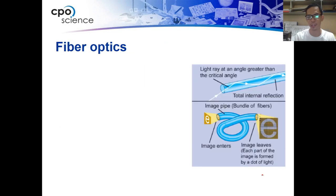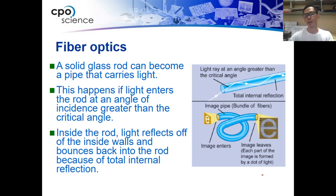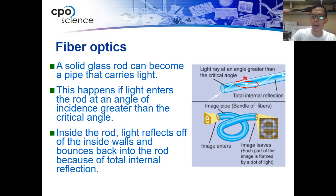One particular application of total internal reflection is the modern way of sending data through light, called fiber optics. Because the light used is being refracted on the glass surface higher than its critical angle, what happens is the light is being reflected back again to the refractive material.